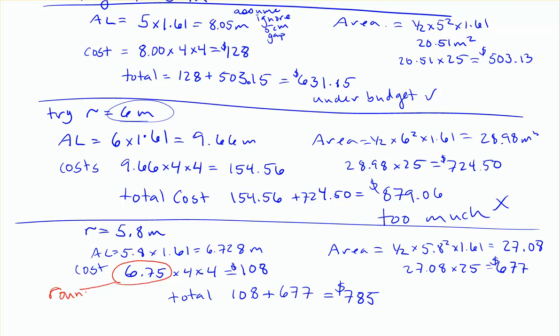I've rounded to the nearest paver. Just because it doesn't make a whole lot of sense to be costing for a paver that you're not actually going to put in there. So I saw that 6.728 is pretty close to 6.75. Again, they're 25 centimeters, so that's a 0.25 at a time. So just rounding there. You'll notice here that my total cost ends up being $785, and that's under the $850.